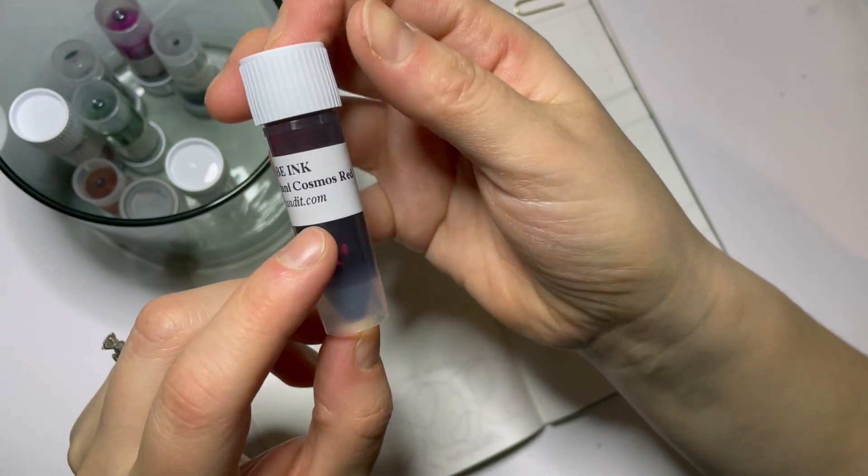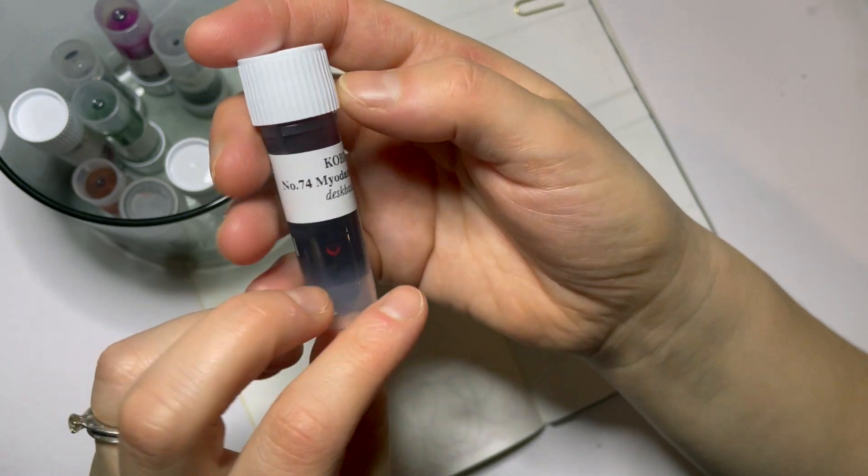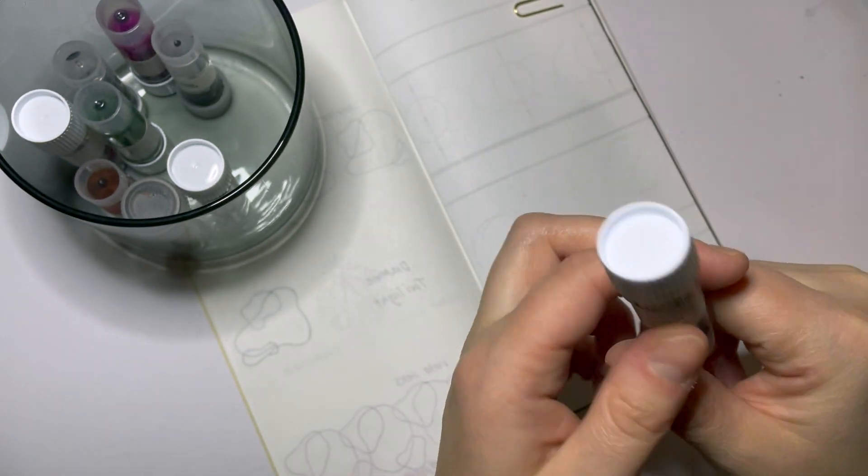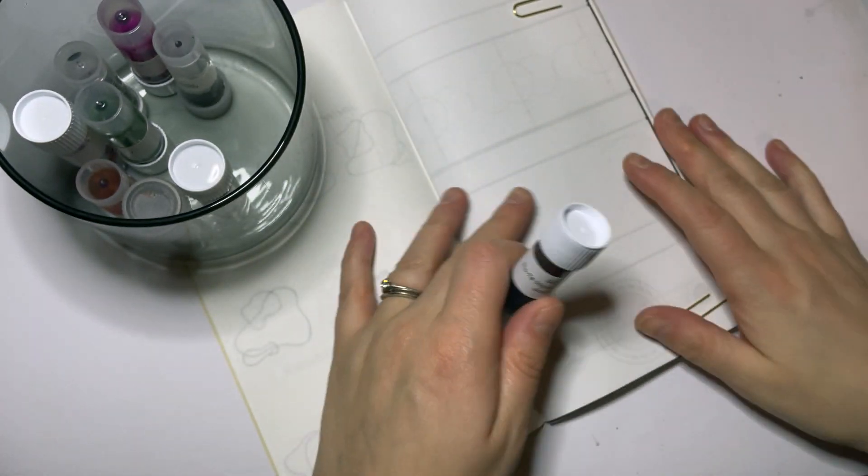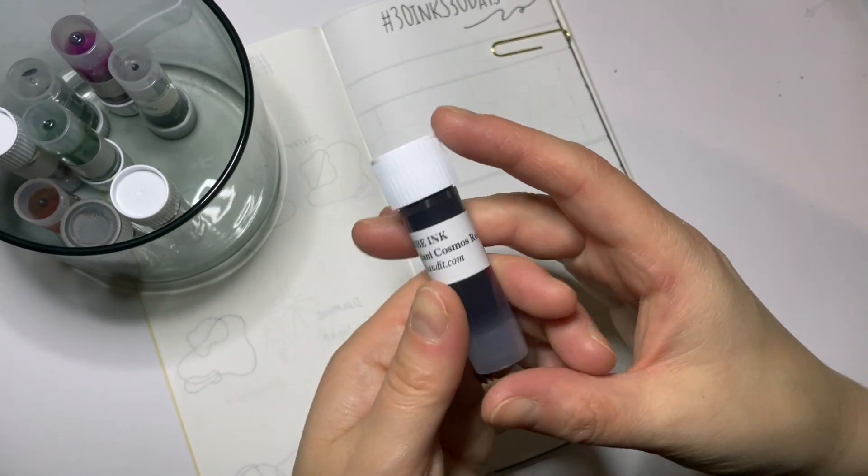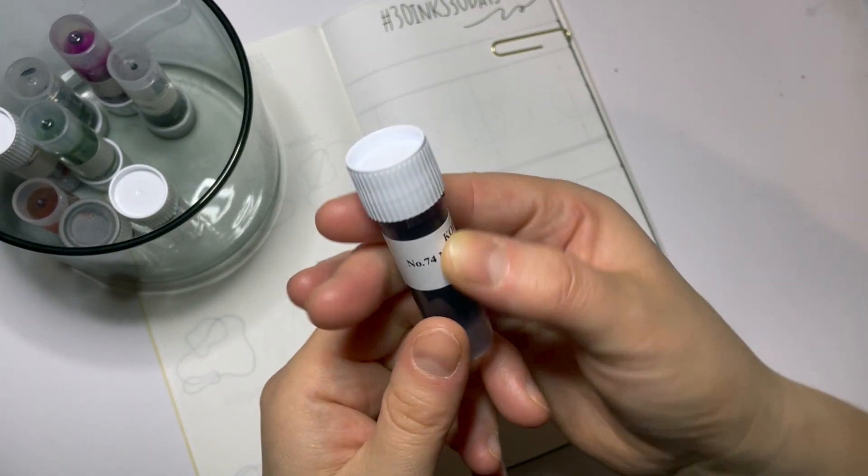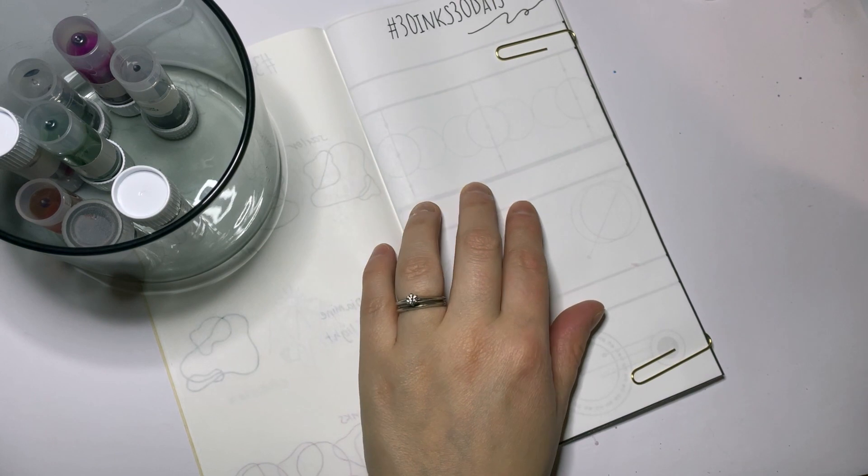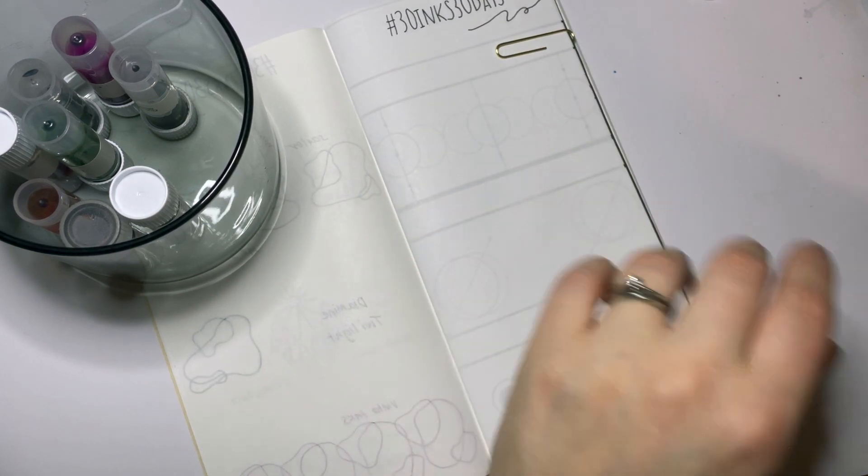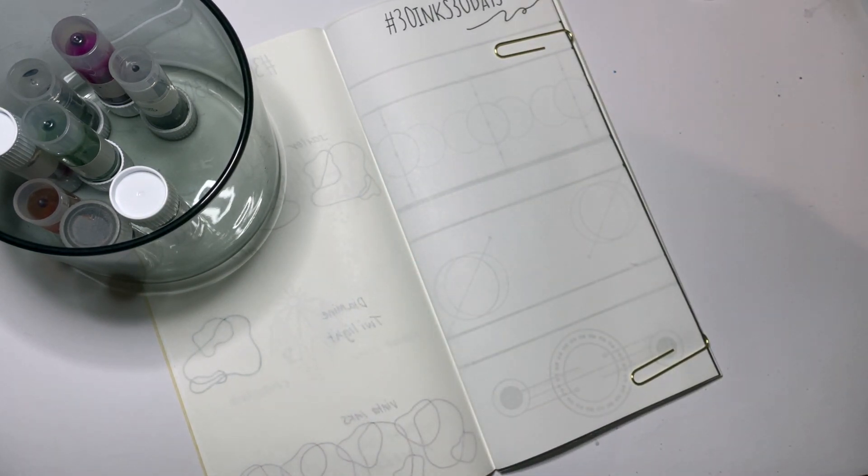Okay, let's jump in, shall we? Today is going to be Kobe Ink number 74 Maiodani Cosmos Red. I'm pretty sure this is one I got for Mother's Day. I'm gonna guess that it's red but it looks kind of like a dark red in the vial there, but why don't we jump in and give this a go?